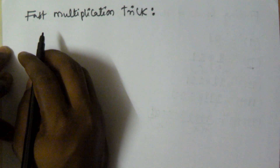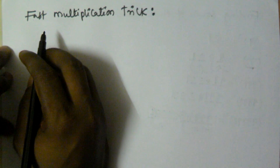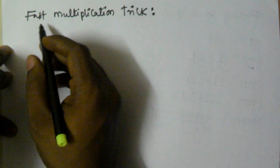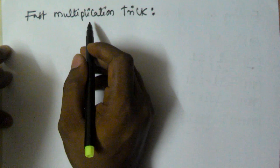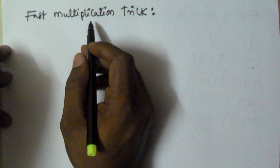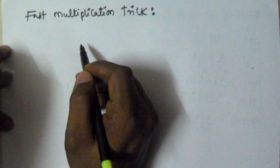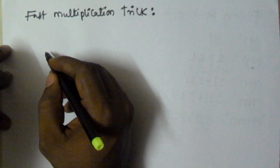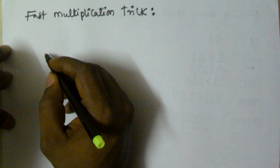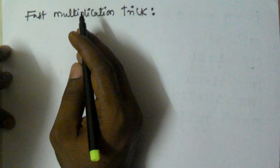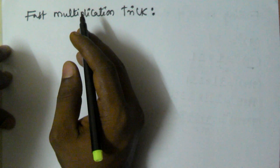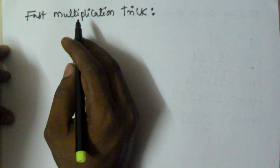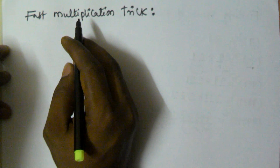Hello friends. In this video I'm going to show you one fast multiplication trick which is going to work when the leftmost digits are the same and the sum of the remaining right digits are equal to a power of 10.